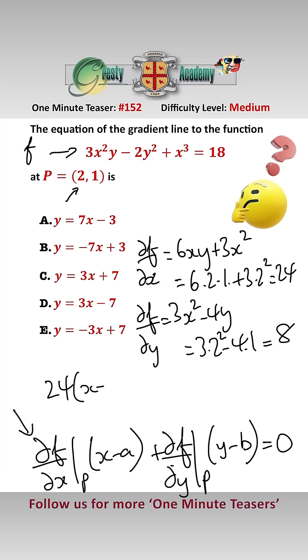And so therefore, using this formula here, we have the equation of the gradient is 24(x minus 2) add 8(y minus 1) equals 0. Tidying all that up, y equals minus 3x add 7, which is answer E.